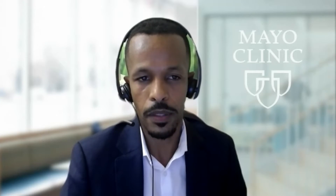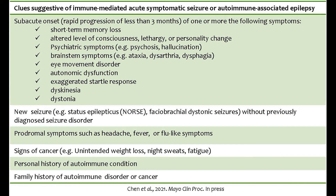These patients present with acute or subacute seizures, often frequent from the onset. A history of preceding viral prodrome is common. Additional neurological symptoms including autonomic disturbances, neurobehavioral problems, memory decline, and movement disorders are also common. Some may present with new-onset refractory status epilepticus.